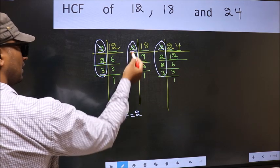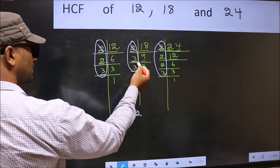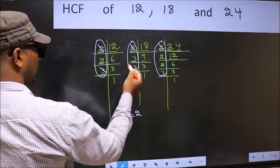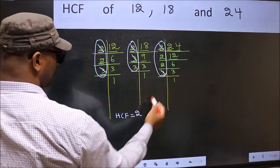Next number 3. Do we have 3 here? Yes. Go to the next place. Do we have 3 here? Yes. So cut 3 right here.